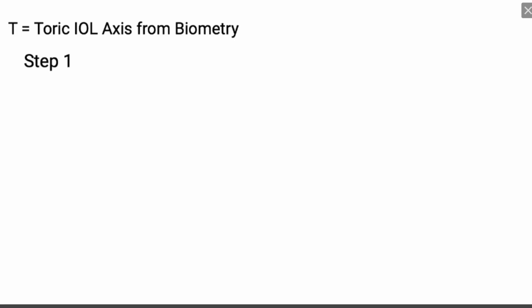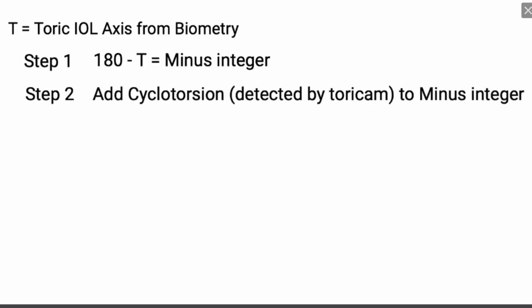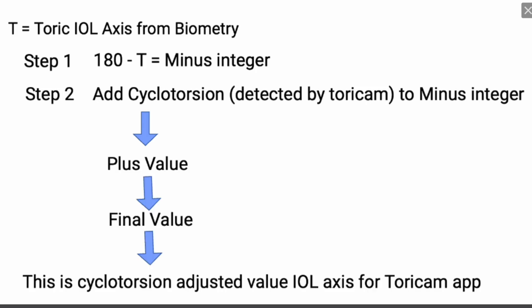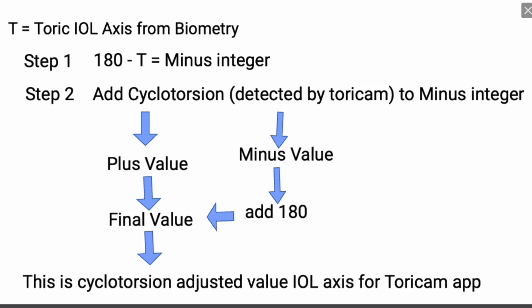The workflow is: Step 1 — 180 minus the TORIC axis. Then add cyclotorsion to the Step 1 value. If that gives a positive value, you can use this as the final value. If it is a minus value, you just add 180 and you will arrive at the final cyclotorsion-adjusted value.